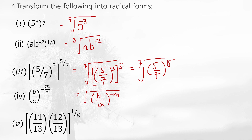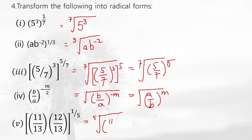For the final one with exponent 5, that means it is the 5th root. With the 5th root and numbers 11 by 13 and 12 by 13 inside, that is the answer. In this way you have to solve these problems.